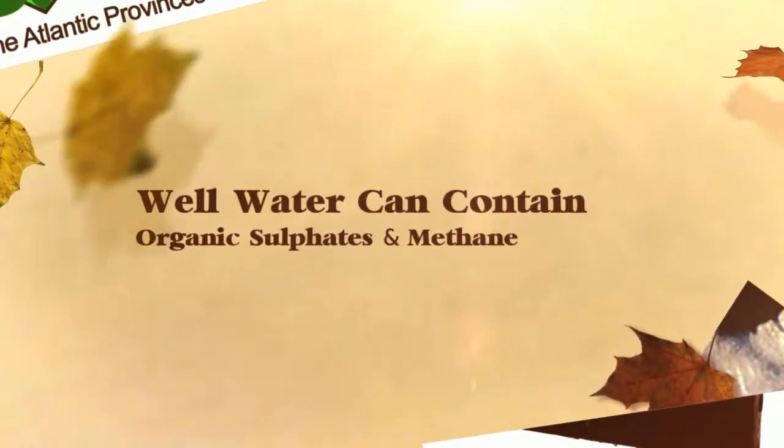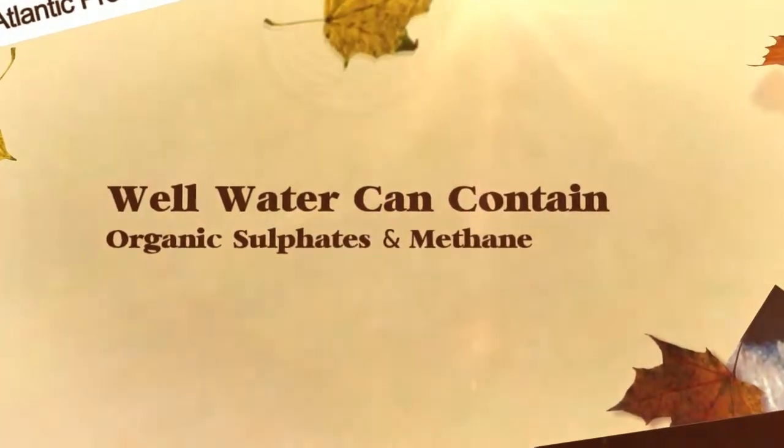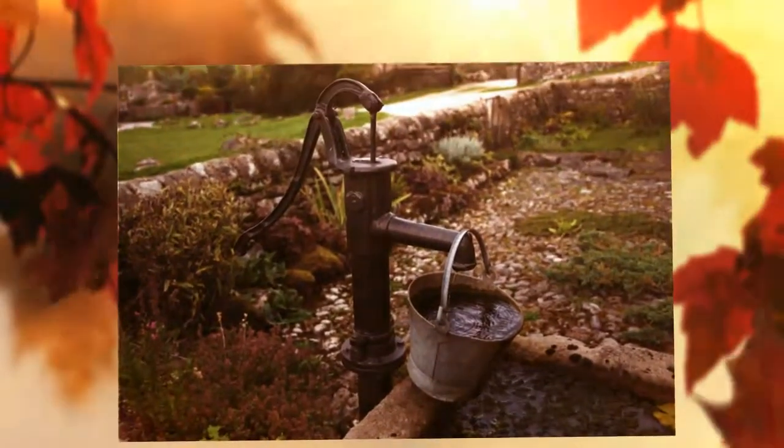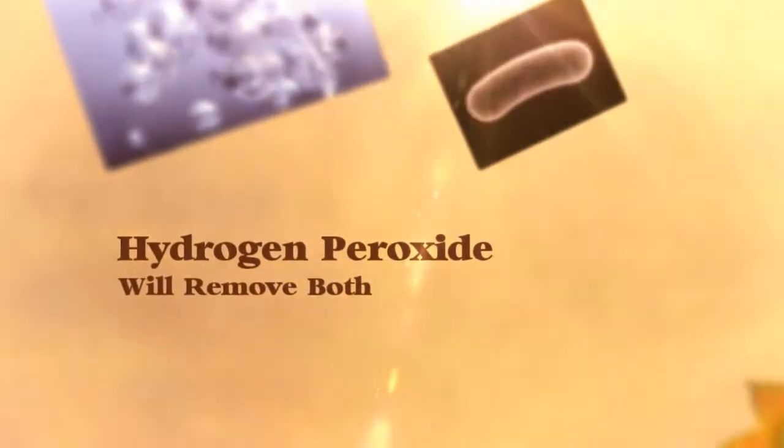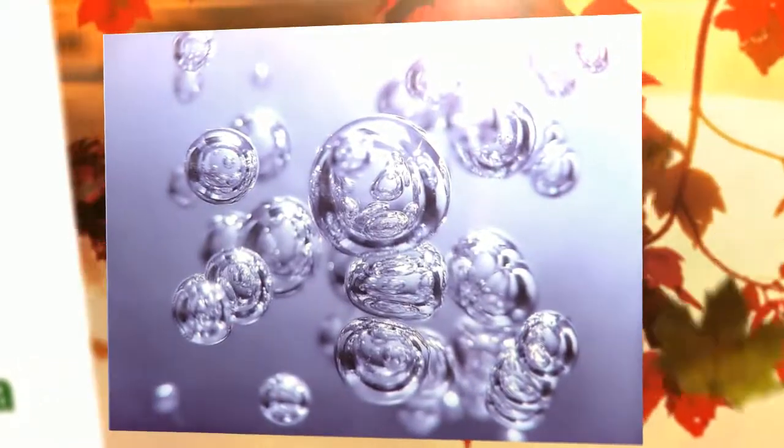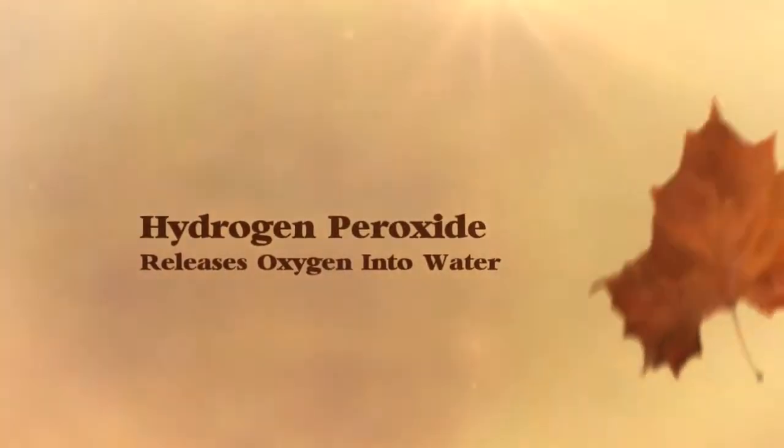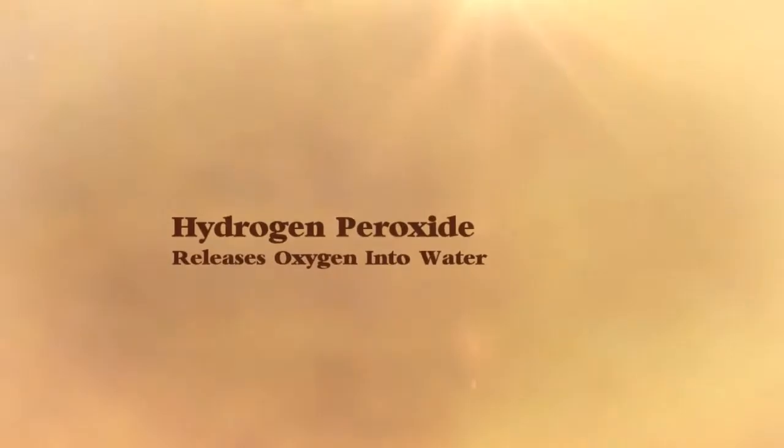By adding hydrogen peroxide to the nutrient solution, any pathogens will be killed. Hydrogen peroxide will also help to counteract the chlorine that most public water supplies contain. Well water can be high in organic sulfates and methane, and the hydrogen peroxide will remove both.